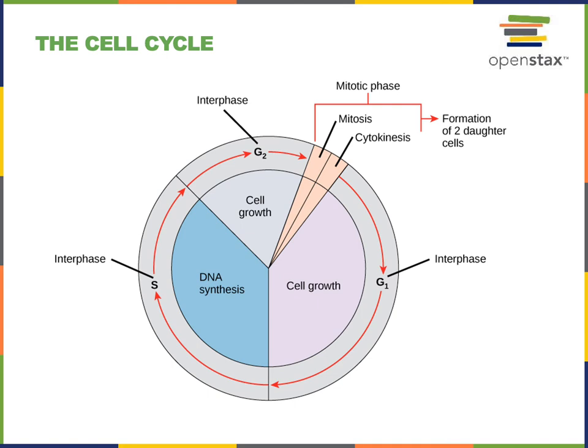S phase is the second phase of the cell cycle. S stands for synthesis. During S phase, DNA is replicated, and so a new copy of DNA is synthesized. This is important because we need to have an extra copy of the genetic instructions to pass on to a second cell in cell division.